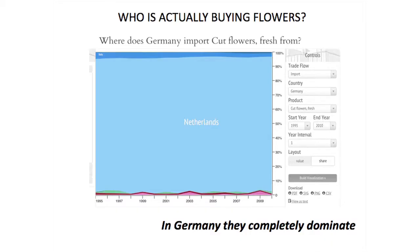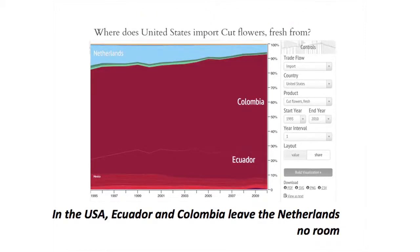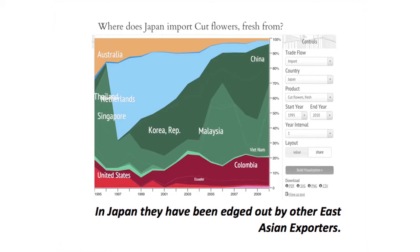Looking at who's buying flowers in a stacked graph: since 1995, for Germany, a very big market, the Netherlands has totally dominated with over 95%. But in the U.S., Ecuador and Colombia have left the Netherlands very little room to compete. And in Japan, which used to be a huge market for the Netherlands, China and Korea have totally taken their market share away.